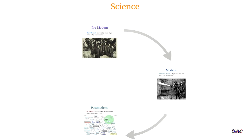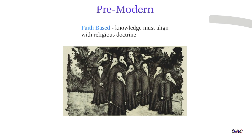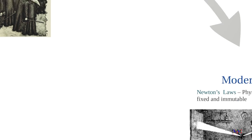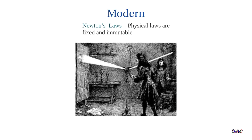What science there was in the pre-modern period was colored by limited technology and religious doctrine. As the Age of Enlightenment unfolded, the scientific method began to displace faith-based explanations of how the universe worked with observation. Supported by mathematics, it seemed like these laws were fixed and universal.